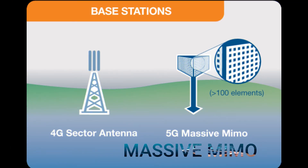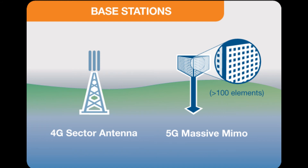5G will use massive MIMO — Multiple Input Multiple Output — antennas that have very large numbers of antenna elements or connections to send and receive more data simultaneously. The benefit to users is that more people can simultaneously connect to the network and maintain high throughput.